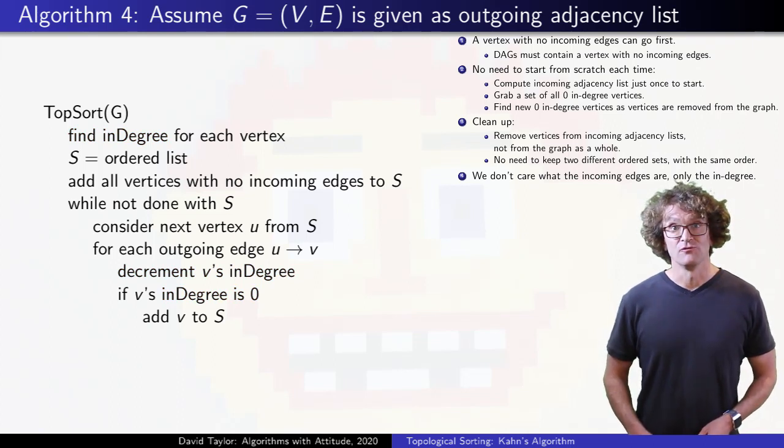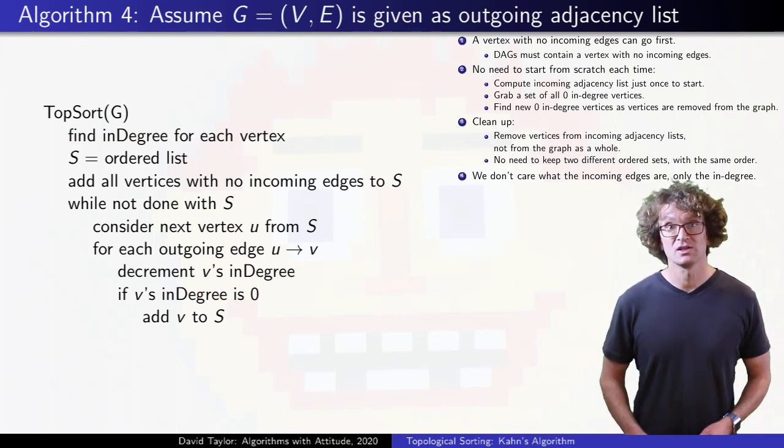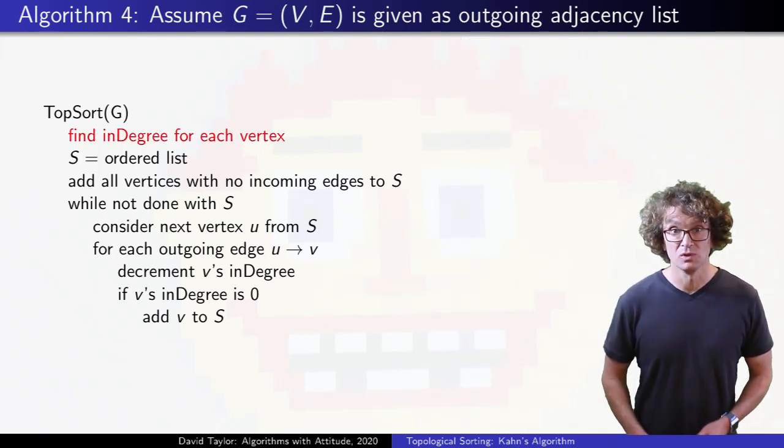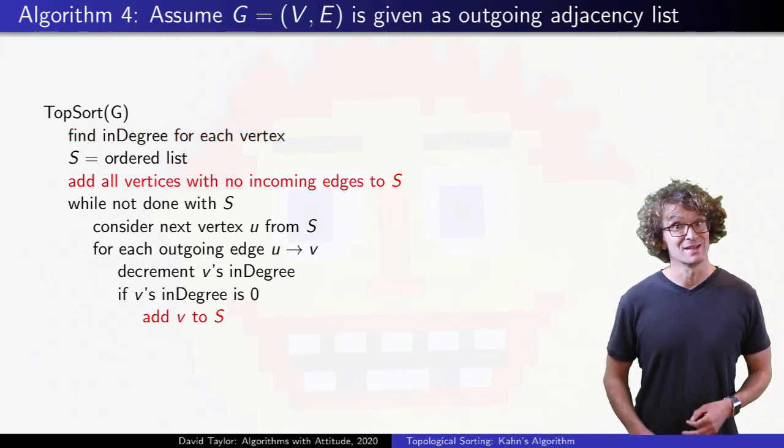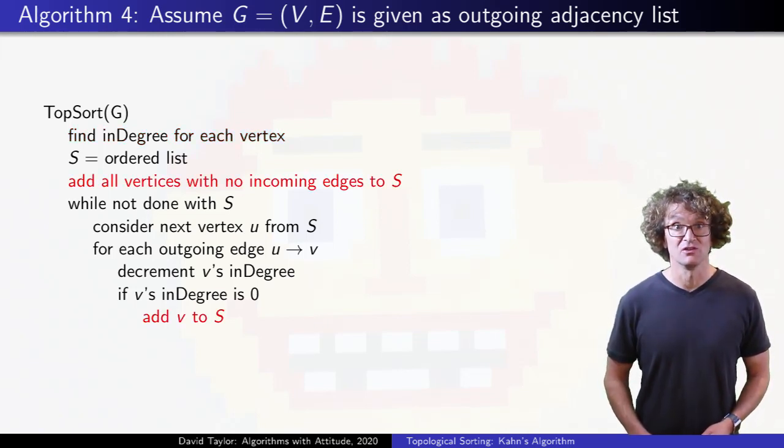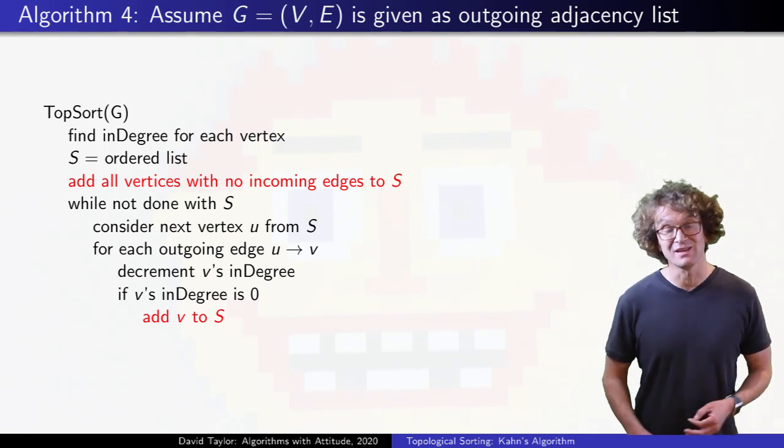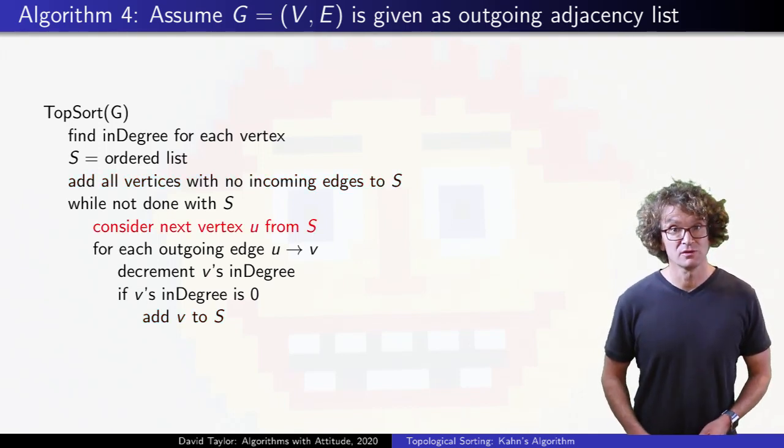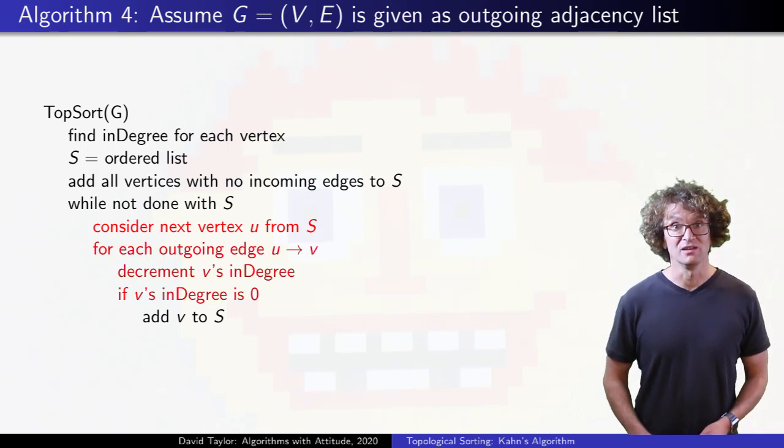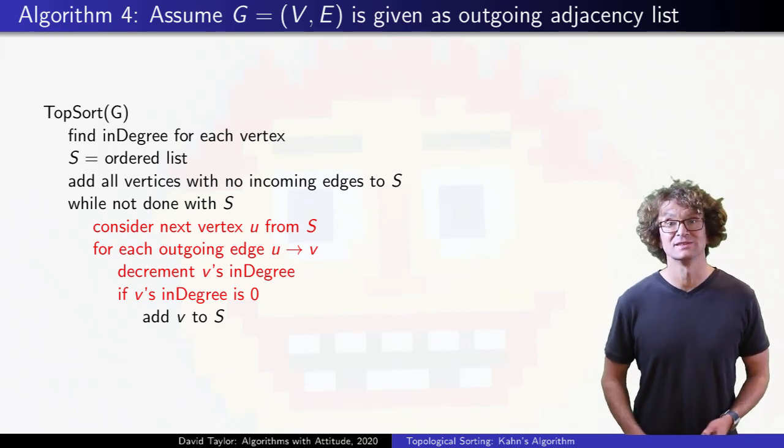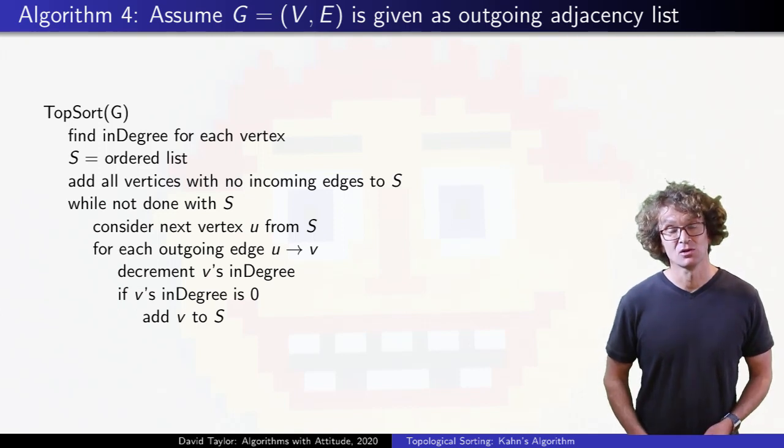I won't try to write more detailed pseudocode, but I do want to analyze the efficiency of this version more carefully. Finding all in degrees takes linear time. Over the course of the entire algorithm, each vertex is added to the list at most once, either at the start if it has no incoming edges, or when its in degree gets decremented to zero. Each vertex in the list is considered at most once, and each edge from the vertex causes at most one constant time decrement. So the algorithm takes time linear in the graph size.